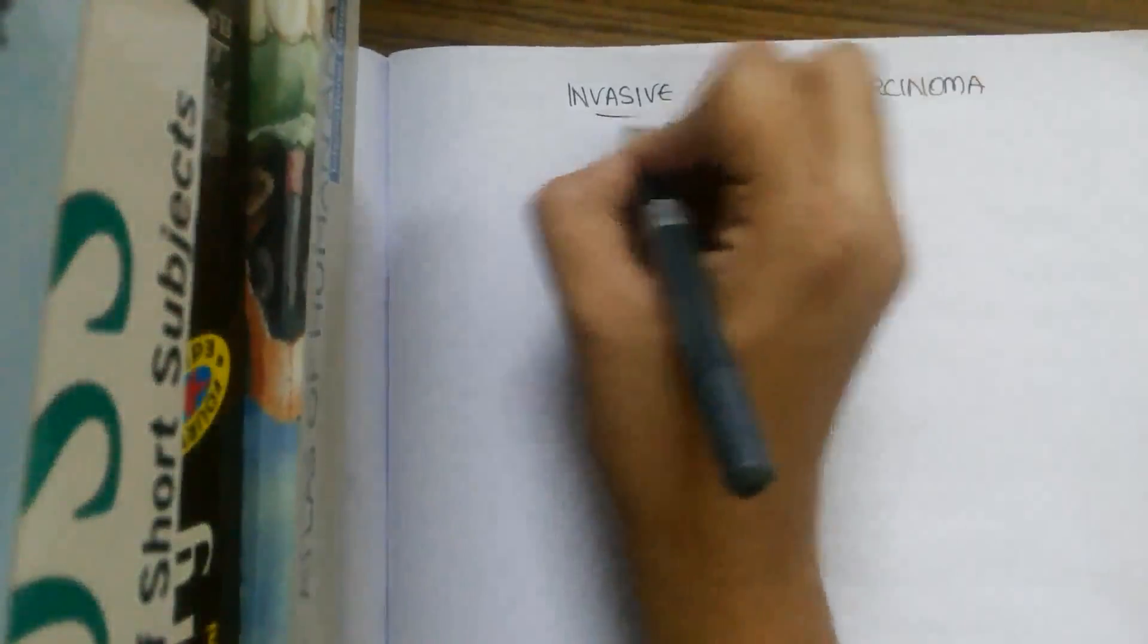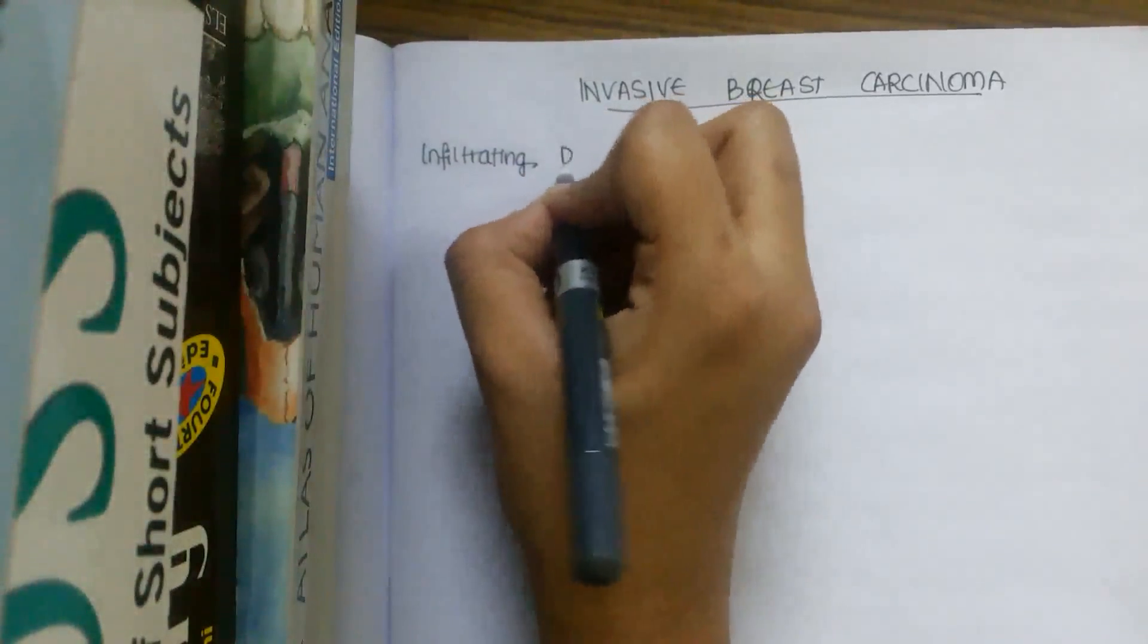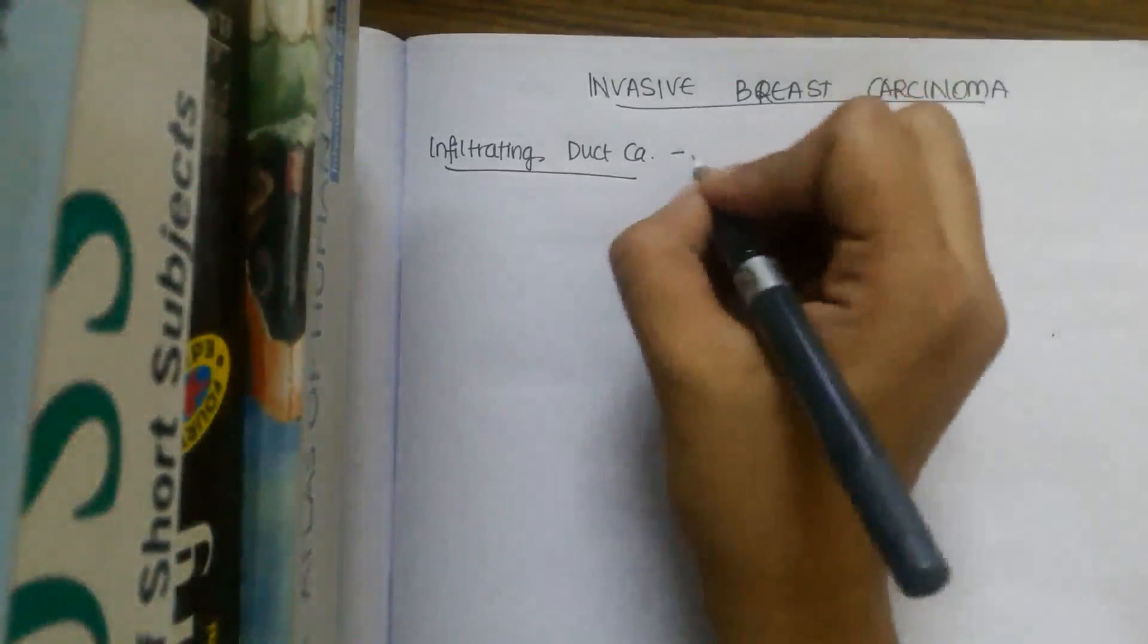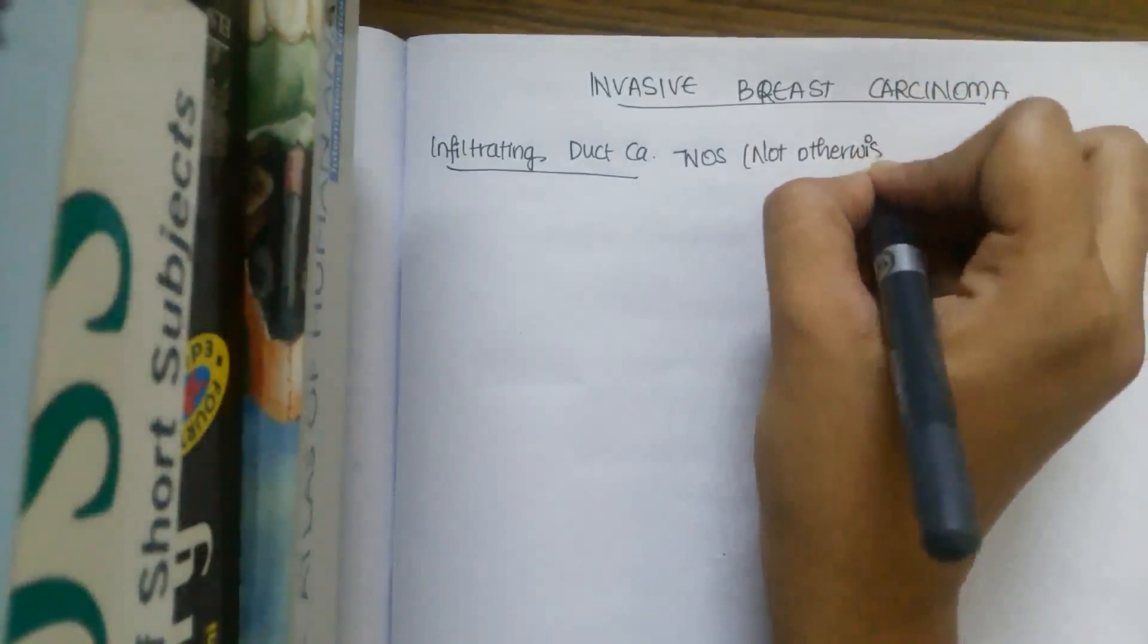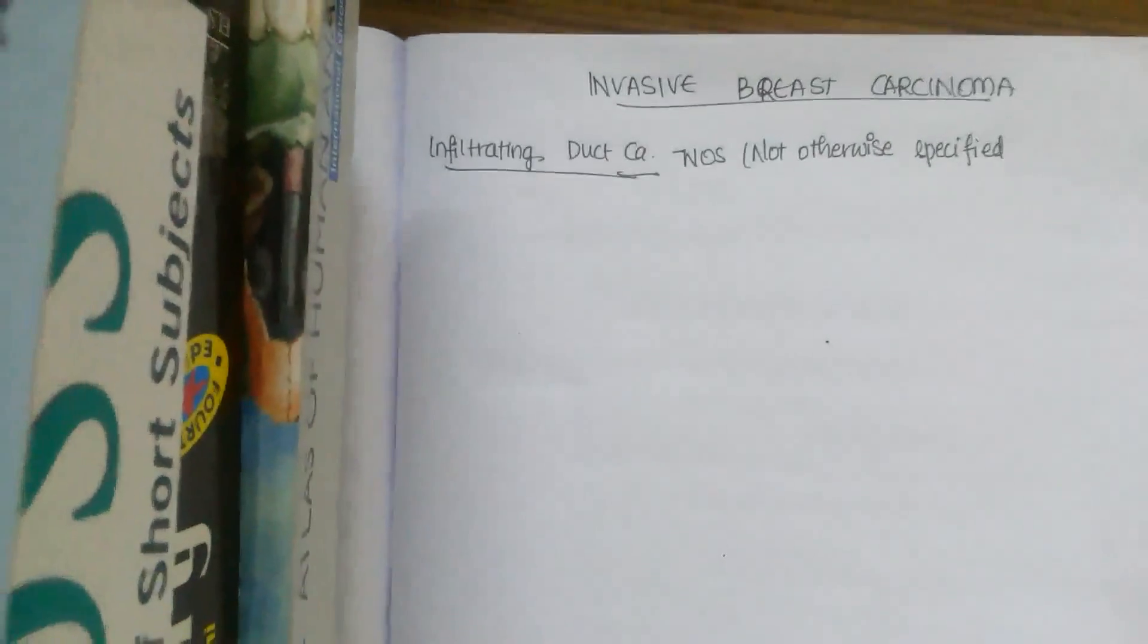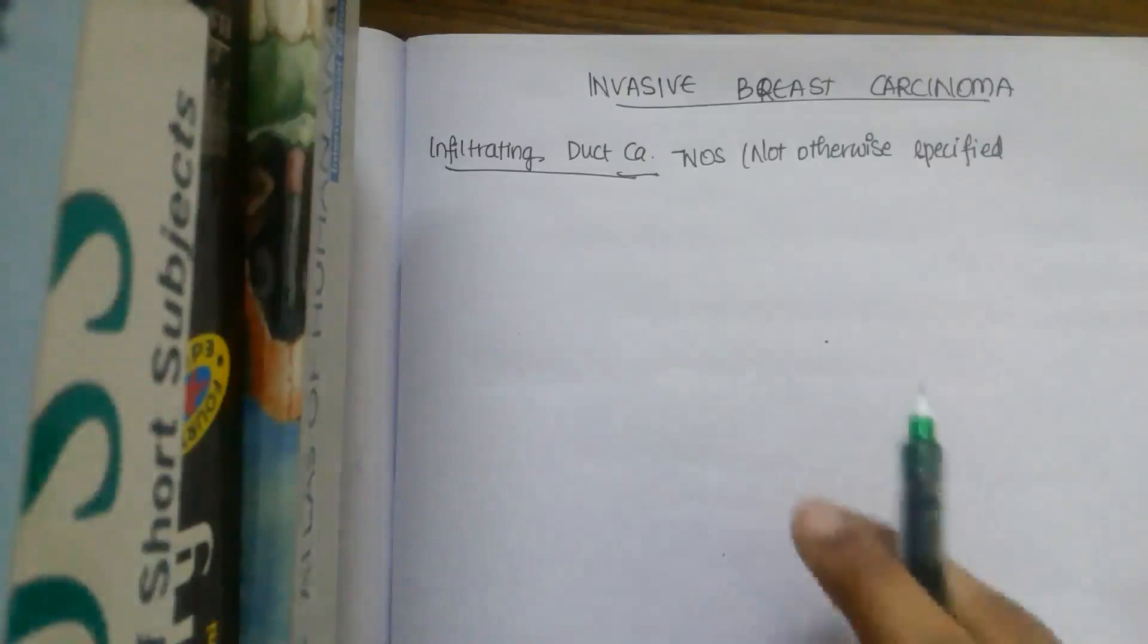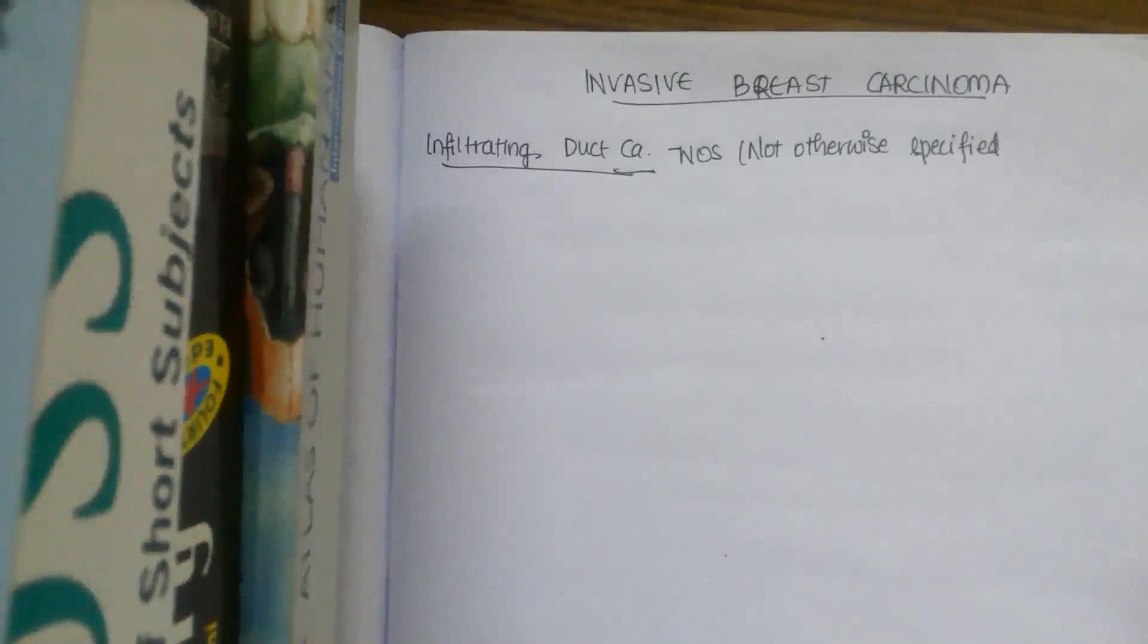In invasive breast carcinoma there is infiltrating duct carcinoma. Here NOS is not otherwise specified. So this infiltrating breast carcinoma is the most common carcinoma and if someone speaks about breast cancer or breast carcinoma, he or she always means that it is infiltrating ductal carcinoma unless otherwise specified.